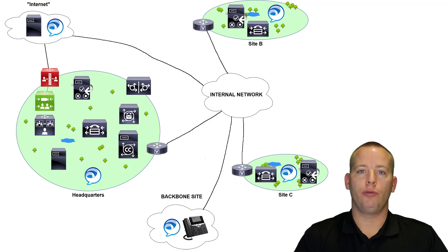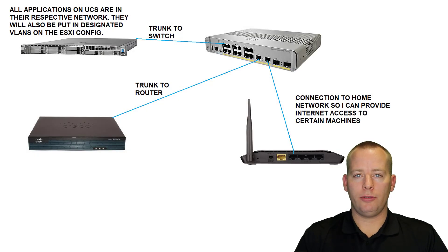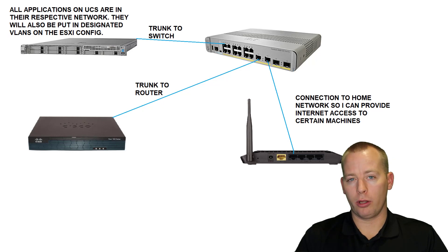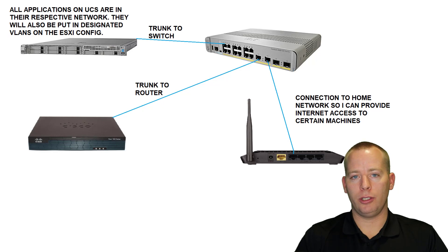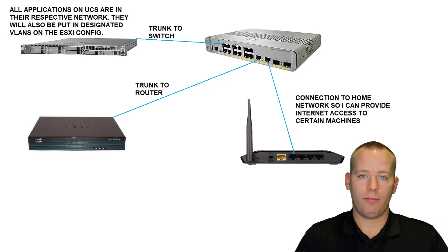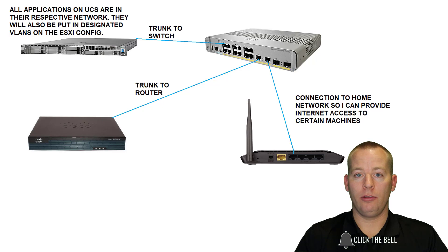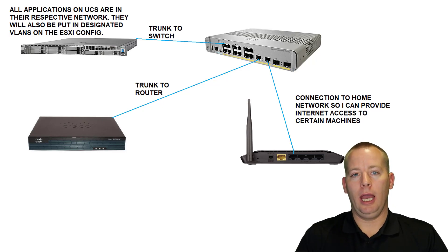You can see that the physical topology is actually really, really simple. There are a number of different ways this could have been done, and I've actually thought about it for a long time, which is part of the reason it's taken me a while to come out with this video. I came to the conclusion that making a trunk from the UCS over to the switch and doing all the VLANs and configurations on the UCS on the ESXi side is going to be the easiest way to tackle this with the least amount of revisions and cabling.